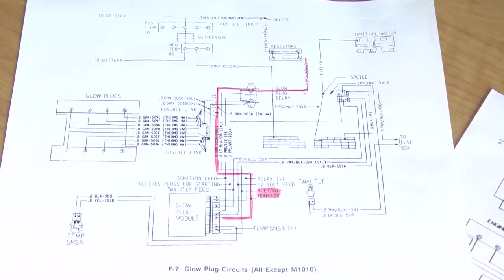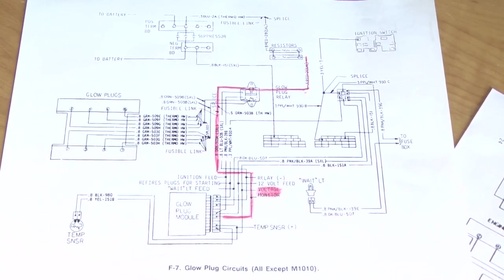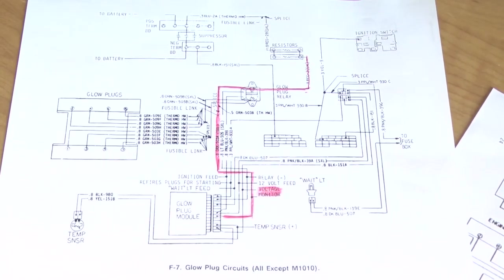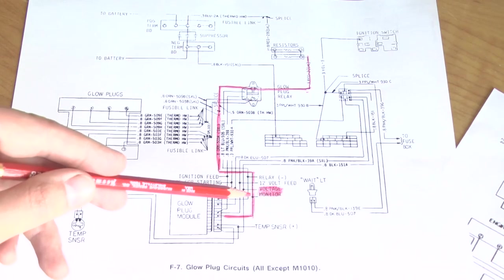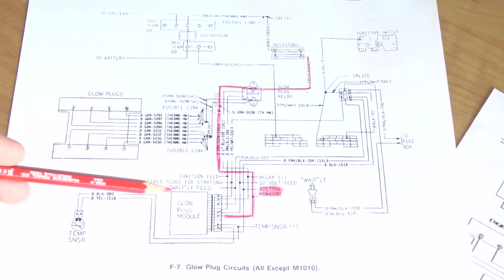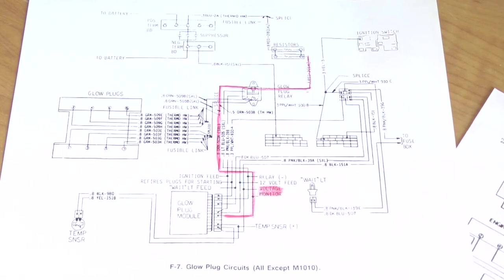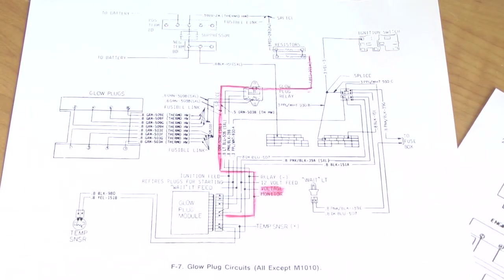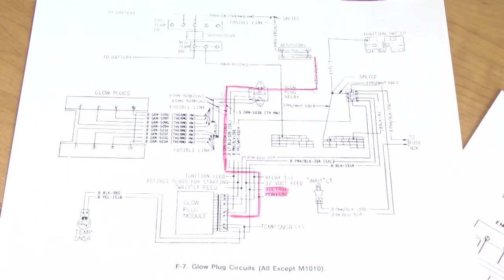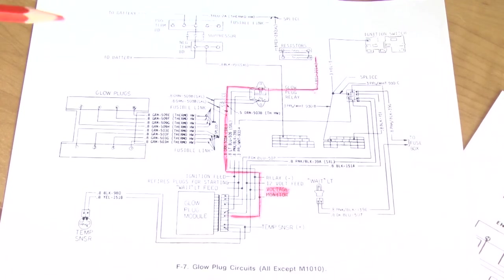I want to close this video by pointing out a big mistake in one of the wiring diagrams that you might find on the internet. If you look for the military technical manuals for these vehicles, you will probably find this wiring diagram. It has one major mistake, and that is in this voltage monitor line from the glow plug module. Like I mentioned previously, the glow plug module has to monitor the voltage at the glow plugs to protect them, but also to know how hot they are, because the hotter they get, the less current they draw, so the voltage rises on the glow plugs. And that helps the glow plug module to know how hot the plugs are, to know how long to leave them on for. So this is a very important line.